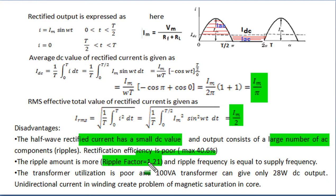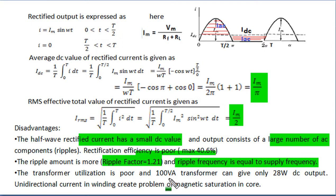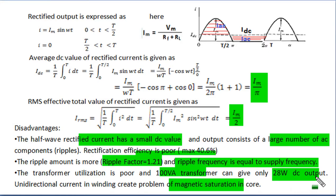The ripple frequency is equal to the supply frequency. When we use the transformer, in the negative half cycle there is no output, so the transformer will create magnetic saturation in the core. Hence a 100 VA transformer will only produce 28 watts of DC output, meaning transformer utilization is also poor in the single phase half wave rectifier. These drawbacks are compensated by the full wave rectifier.